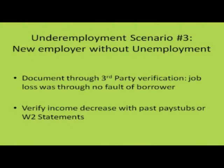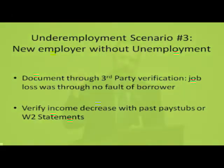Third scenario: new employer, never received unemployment benefits during the period of unemployment. In this case, you'll need to get some verification from a third party — very likely the past employer — to indicate they lost that original job through no fault of their own. Then document current and past income based on pay stubs and W-2 statements. That's how you handle each of the three underemployment scenarios, and these changes are also reflected in your Hardest Hit manuals.